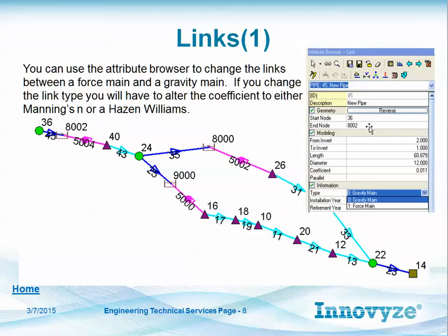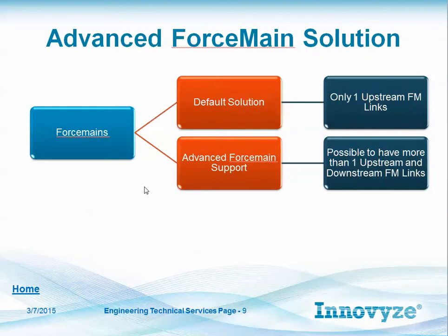Links are gravity main or force main. They're all normally circular pipes unless you give it an option to change to rectangular. Options are Manning's n for gravity mains and Hazen-Williams for force mains. The advanced force main solution allows more than one upstream and downstream force main link — you can have bifurcating or combining force mains. In the steady flow solution, you're restricted to only one upstream and one downstream force main link.